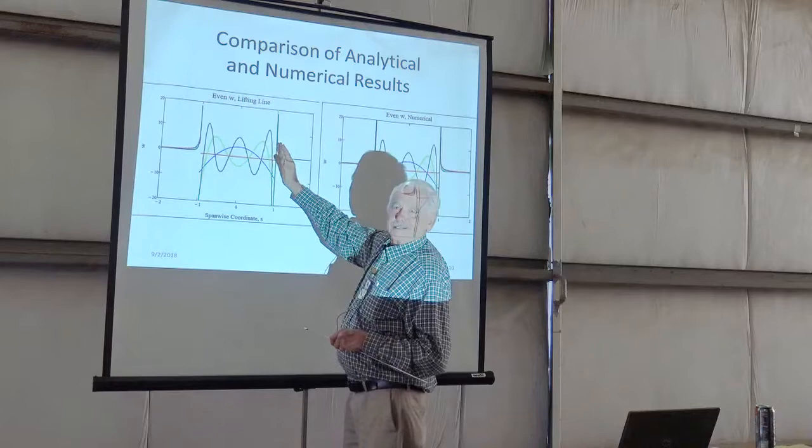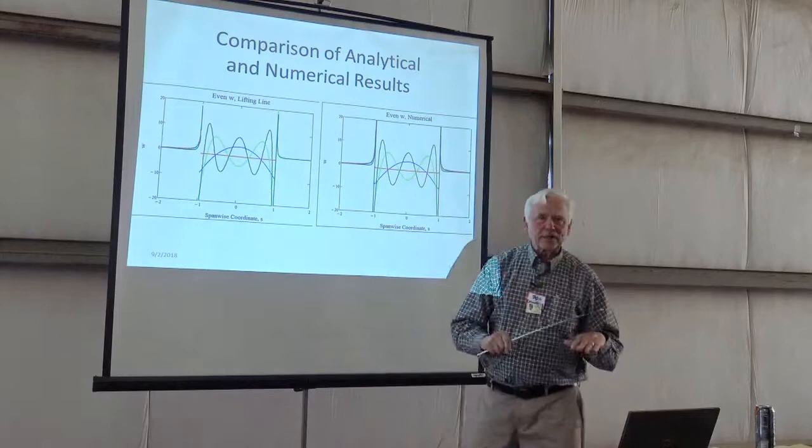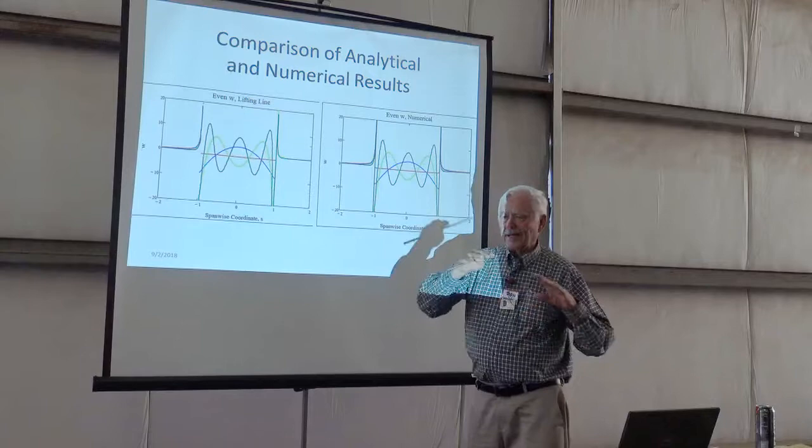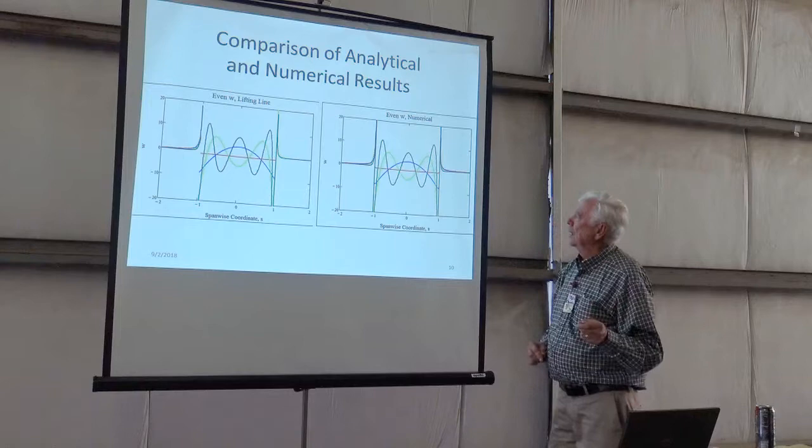But I don't like singularities like this. So I try to sum some of these solutions so that they all add up and you get a nice smooth velocity distribution. I want the velocity and the slope of the velocity to be continuous over this singularity region.